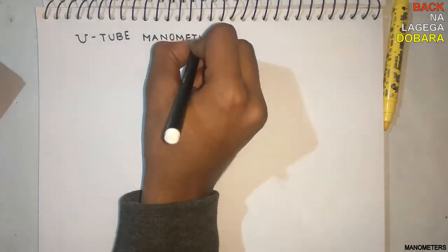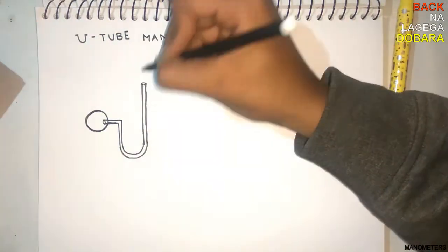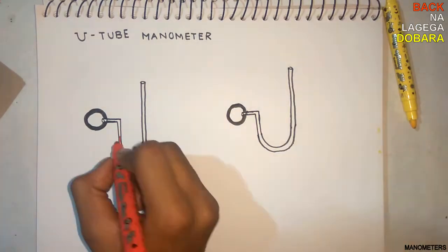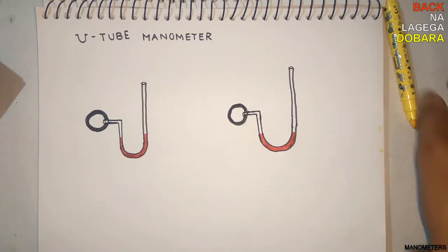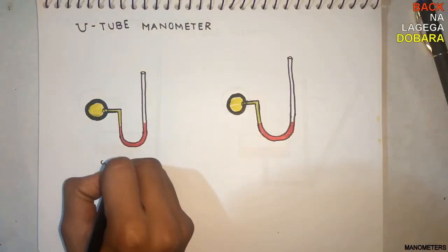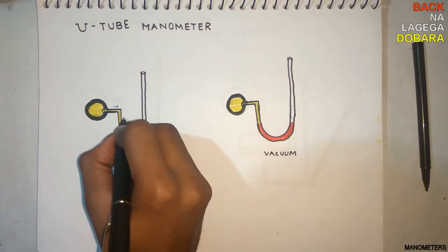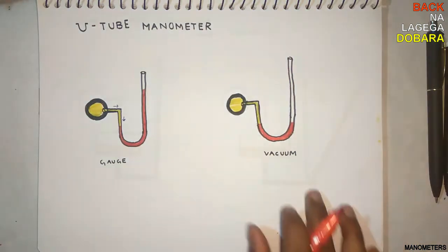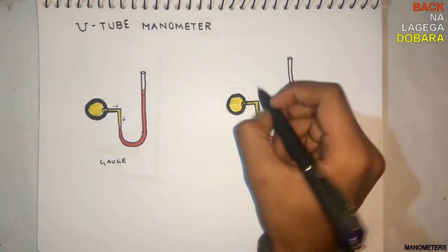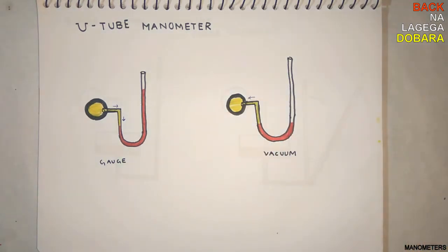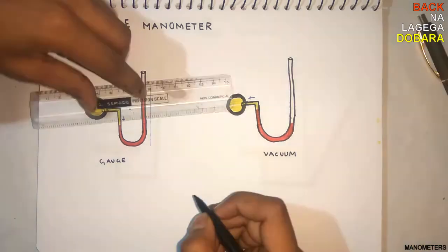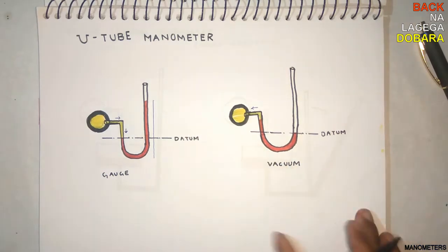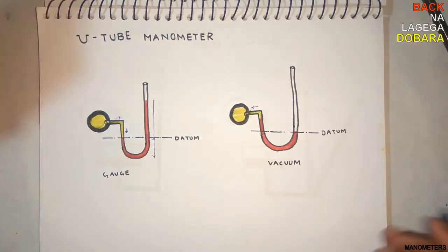Now let's see U-tube manometer. We have a heavy liquid, we represent it with red color ink, and yellow is the liquid inside the pipe with density rho 1. Let's see for gauge pressure: the pressure will push the liquid outside and the red liquid will rise up. In the vacuum side, the red will be sucked in. For drawing datum, we consider the lower part of heavy liquid. Height of heavy liquid from the datum will be H2, and height of yellow liquid will be H1.